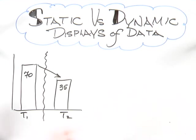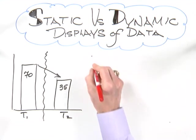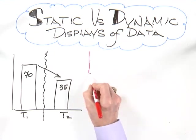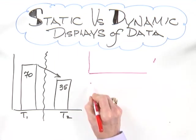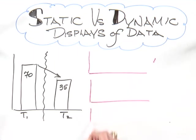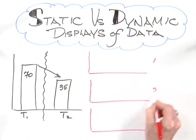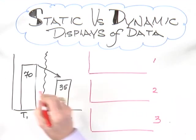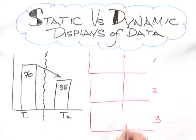Now the question becomes: how did the three units that were part of this initiative fare from time one to time two? Here is unit one, here is unit two, here is unit three. Each one has a time one measure and a time two measure, and here is where the intervention occurred, between time one and time two.